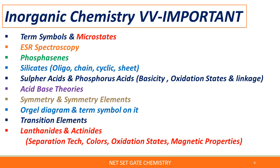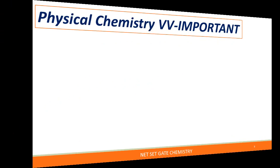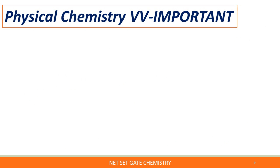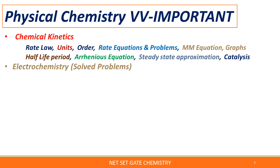So these are the organic and inorganic topics asked in the GATE and CSIR NET exam. Now for physical chemistry topics — very very important topics are chemical kinetics, one of the most important topics, in which rate law, units, order, rate equations, and problems based on them you have to cover. The Michaelis-Menten equation, graphs for half-life period, and relations between order and half-life period you have to focusfully observe. Also Arrhenius equation — numericals will be asked.